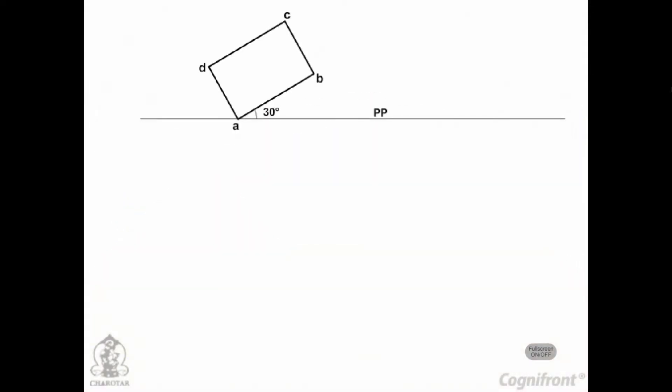Draw the top view ABCD with A in PP and the longer edge AB inclined at 30 degrees to PP. Mark its center O. Mark S, the top view of the station point, on a vertical line through O and 50mm below PP. Draw lines joining S with corners B, C, and D, intersecting PP at points B1, C1, and D1.